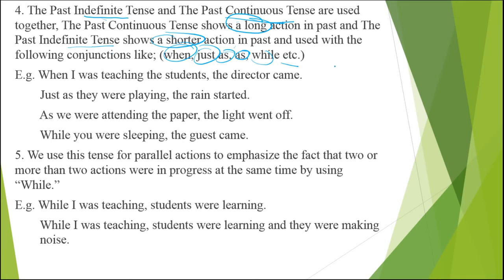In our coming lectures, we will be discussing clauses. These sentences are actually made with the help of clauses and we will be using conjunctions here. We will discuss what adverb clauses of time are, but here we will just understand it as a usage. The conjunctions to keep in mind are: when, just as, as, and while — conjunctions of time used to join two clauses to express time.